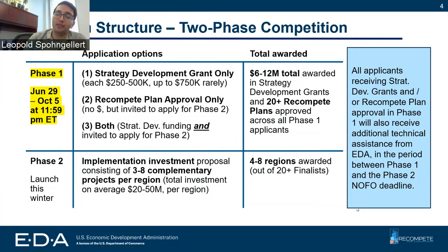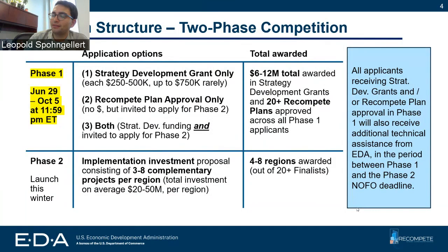Our strategy development grant provides planning dollars for folks who want to further develop their strategy for reducing the prime age employment gap in their community. We plan on awarding about $6 million to $12 million in strategy development grants. These awards will be approximately $50,000 to $500,000 apiece.